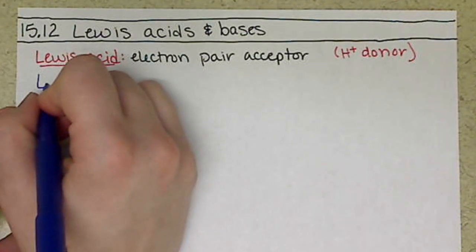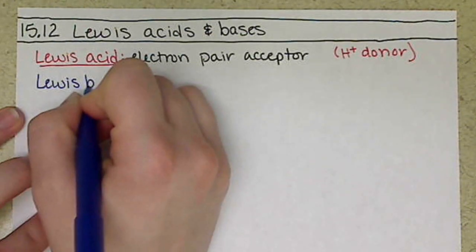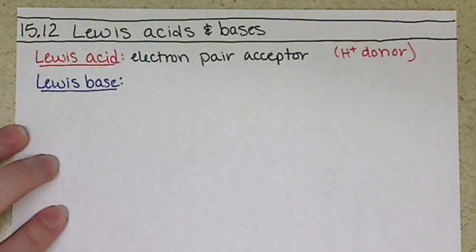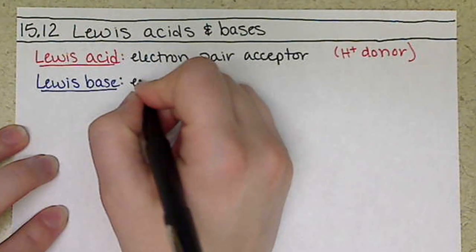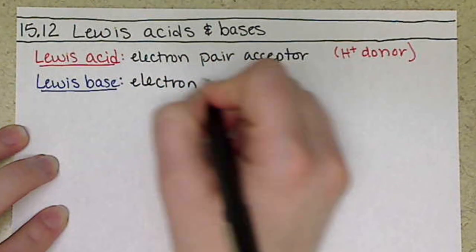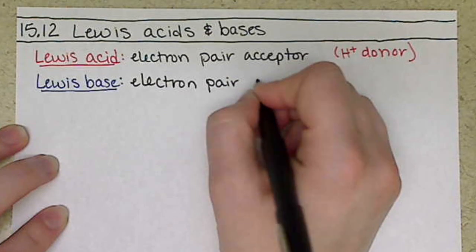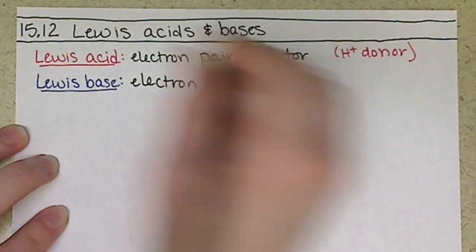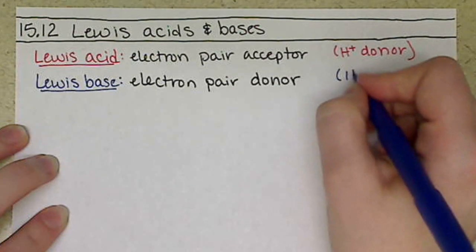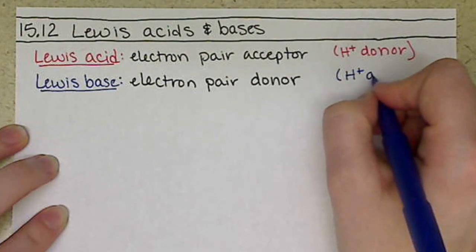A Lewis base is going to be where those electrons come from. They are the electron pair donor. And again, our Bronsted-Lowry definition, we have a proton acceptor.